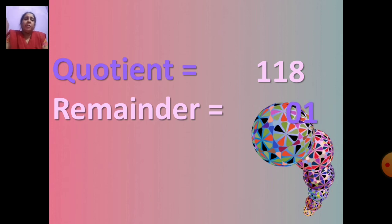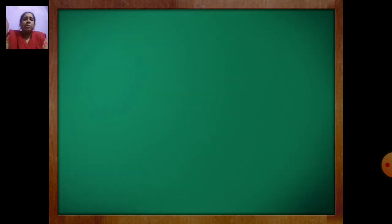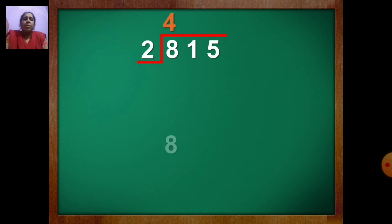Now we will do the second question. See second sum: 815 divide by 2. Here also you will draw the line first. Write the bigger number inside and small number out — 2 will be the divisor. Now take one number at a time. In table of 2, when you get 8: 2 fours are 8. So you will write 4 up, 8 down. Draw the line, put the sign of minus. 8 minus 8 is 0.